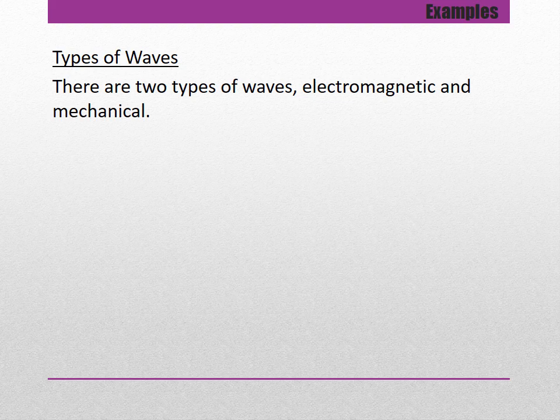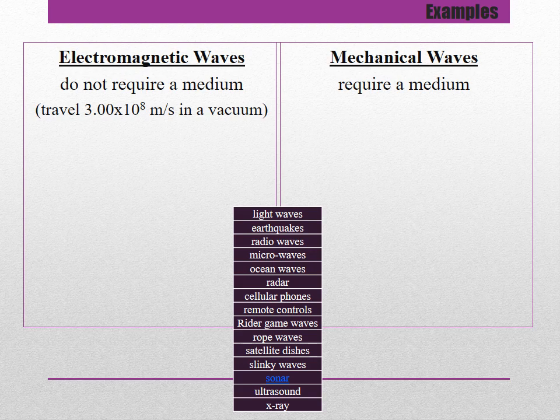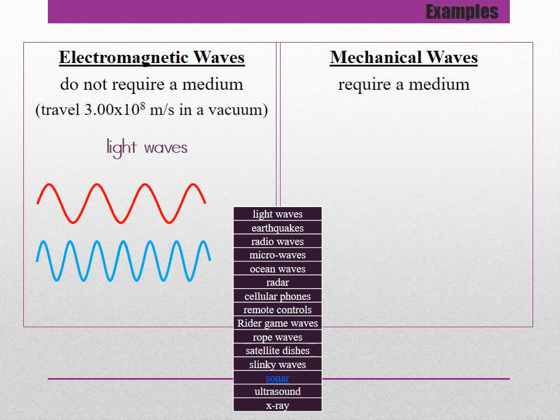There are two types of waves: electromagnetic and mechanical. Electromagnetic waves do not require a medium — they do not need a material to get from one point to another, and they travel 3.00 times 10 to the 8 meters per second in a vacuum. Mechanical waves require a medium. Light waves are electromagnetic waves — we know this because we can see the sun, and light travels through empty space to reach earth.